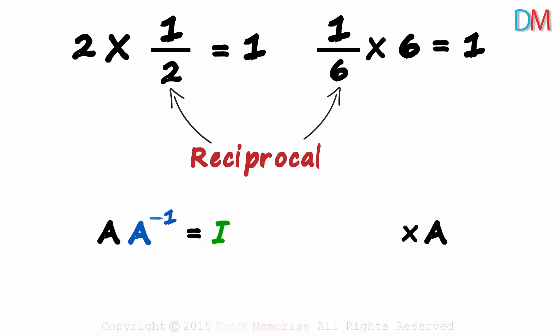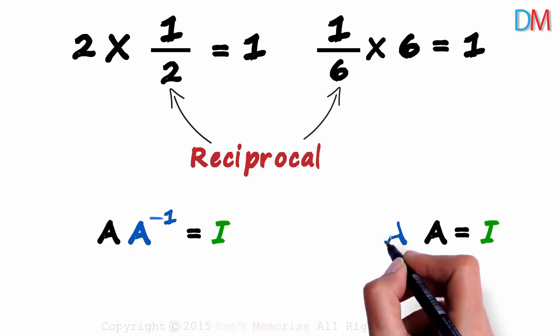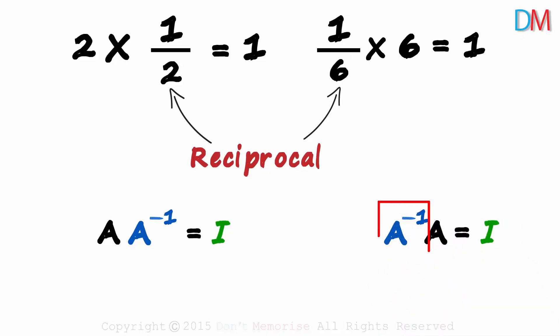And what multiplied by A will give us the identity matrix? Again, it's A inverse. A inverse times A will give us the identity matrix.